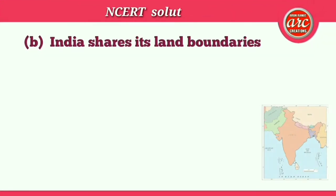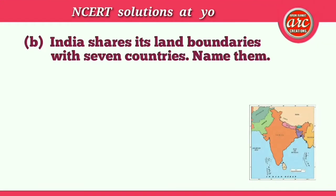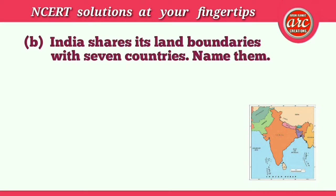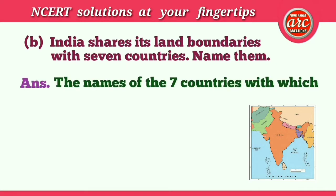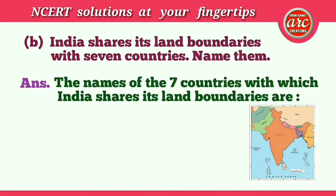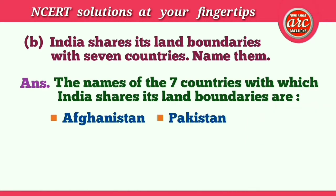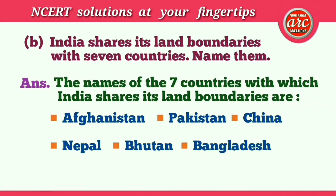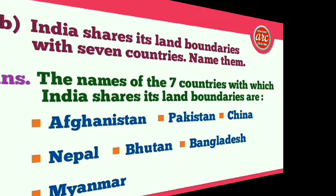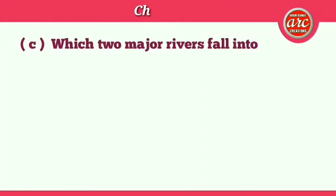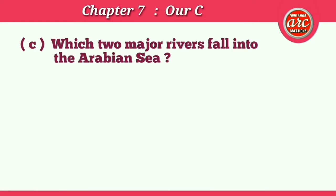(b) India shares its land boundaries with seven countries — name them. Answer: The seven countries with which India shares its land boundaries are Afghanistan, Pakistan, China, Nepal, Bhutan, Bangladesh, and Myanmar.